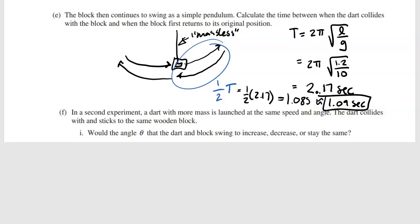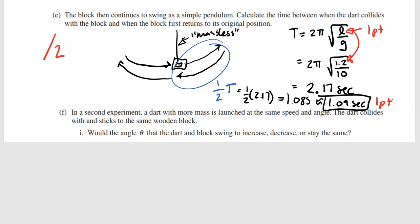The rubric for part E is worth two points: one point for using the correct L = 1.2 in the correct period equation for a simple pendulum, and one point for recognizing that you need to divide the period by two.